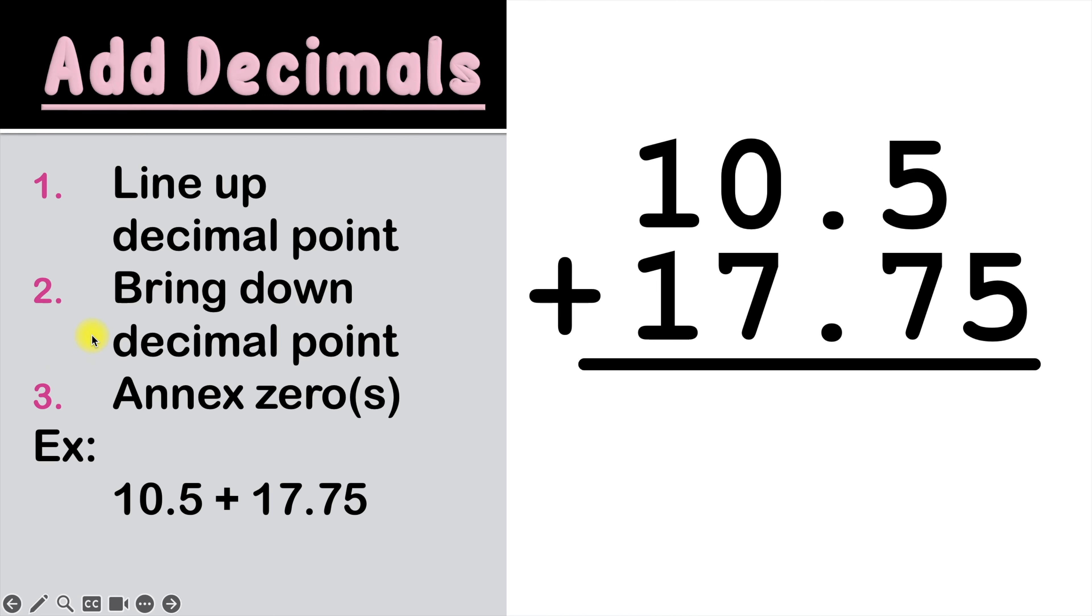Now we can go to step two, which is to bring down our decimal point. Because the decimal point is going to be in our answer directly below where it is in the question. So we'll follow these decimal points right down here and place the decimal point for our answer right there.